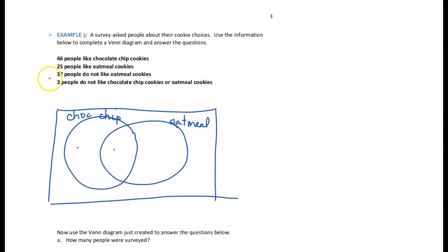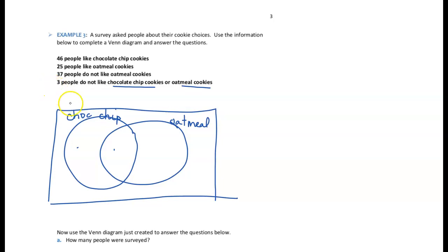The statement that's most specific about both chocolate chip cookies and oatmeal cookies is the last one: three people do not like chocolate chip cookies or oatmeal cookies. That means those three people are outside of both sets, placed in the outer region of the Venn diagram.